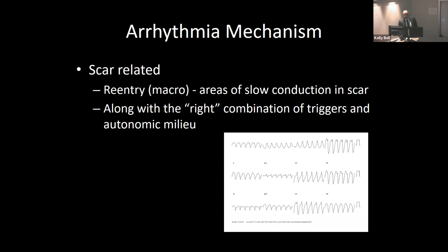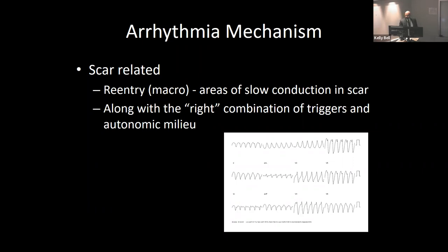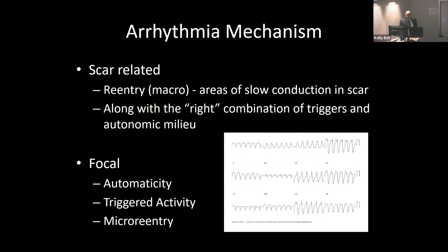The VT we're talking about is structural VT — there's a scar in the ventricle, most commonly from a prior myocardial infarction. Most people think of scar as completely dead, but that's not true. There are parts not completely dead that can have electrical conduction and properties that set up re-entrant arrhythmias. We call these border zones — not truly dead scar but not truly healthy tissue either. There are also arrhythmias from automaticity, triggered activity, and micro-reentry, but those don't apply to this scar-mediated mechanism.